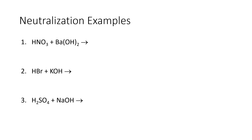This slide contains several examples of neutralization reactions. In the first example, nitric acid HNO₃ reacts with barium hydroxide. The hydrogen ion is +1, nitrate is a polyatomic ion with a -1 charge, barium is in group two so it has a +2 charge, and hydroxide has a -1 charge. We swap partners: the hydrogen ion pairs up with the hydroxide ion, giving us H⁺ and OH⁻.